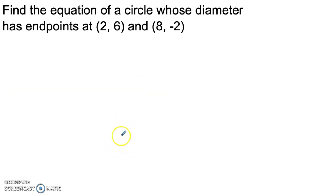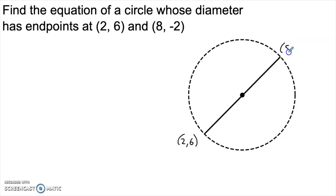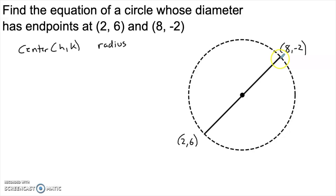Let's look at one more example. I'm given the coordinates of the endpoints of a diameter: (2, 6) and (8, -2). To find the equation, I need the center and the radius. What makes a diameter a diameter is that it must pass through the center of the circle. Because of the symmetry of a circle, the center must be the midpoint of the diameter.